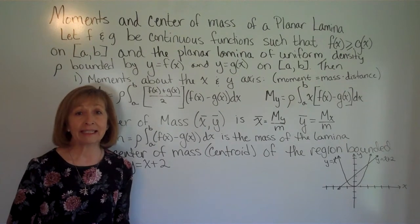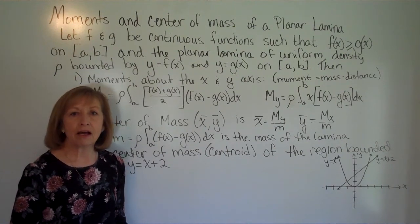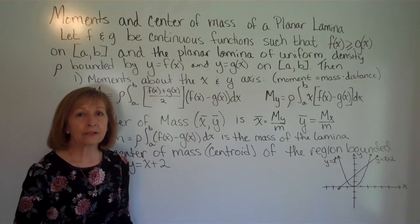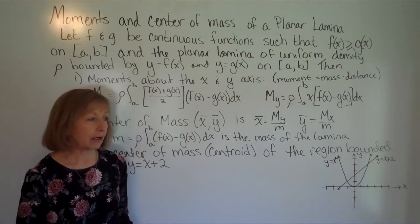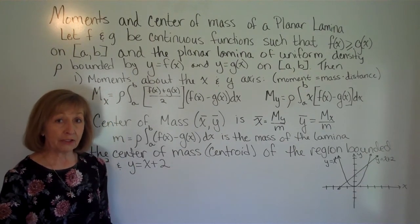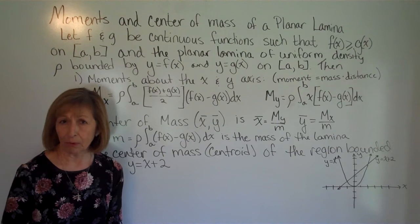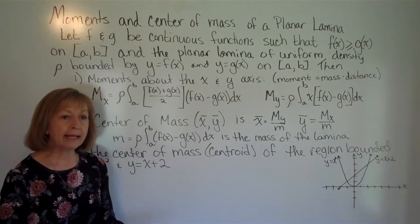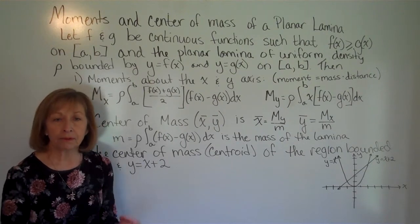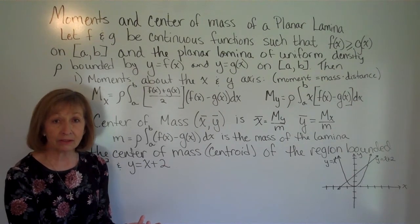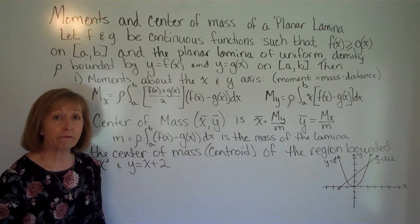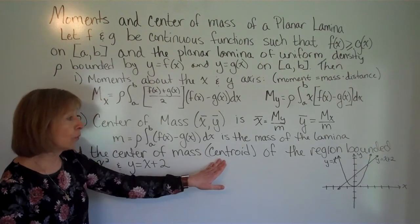When finding the centroid of a region in the plane, we can take rho = 1 to get the coordinates of the centroid — that's the balancing point of the region. If you cut out the region and balanced it on the point of a pencil, it should balance at this center of mass, or centroid.